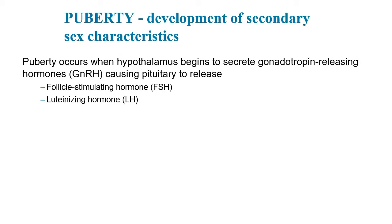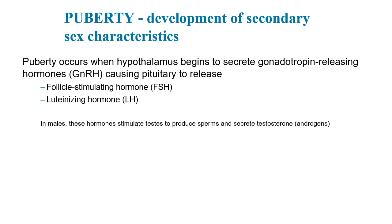Let's look at puberty. Puberty actually begins earlier than most people realize. Puberty occurs when the hypothalamus begins secreting gonadotropin-releasing hormone (GNRH), which causes the pituitary gland to release follicle-stimulating hormone (FSH) and luteinizing hormone (LH). In males, these hormones stimulate the testes to produce sperm and secrete testosterone. In females, they stimulate the ovaries to produce estradiol and estrogens.